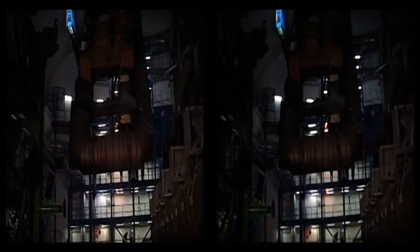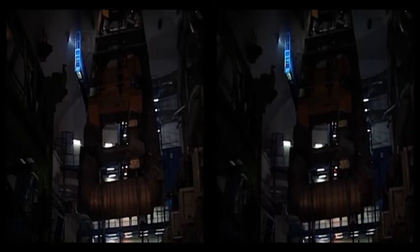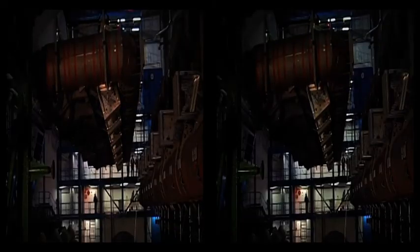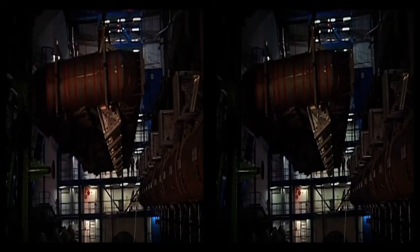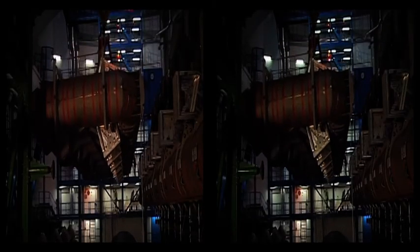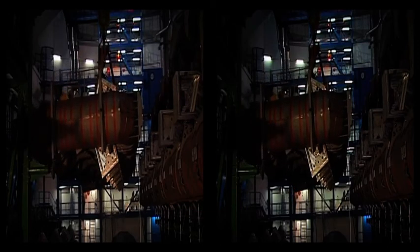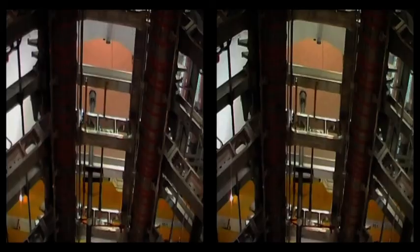Here we see the assembly of one of the eight ATLAS superconducting toroid magnets. Each 100-ton magnet coil was lowered individually through the shaft and then assembled to define the characteristic size and shape of ATLAS.